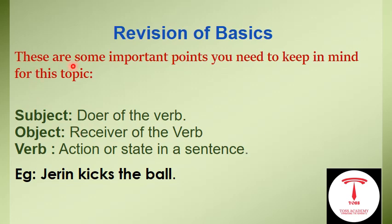These are some important points to keep in mind for this topic. Who is a subject? Very simple — the doer of the verb in a sentence is the subject. Second, object: the object is the receiver of the verb. And finally, what is a verb? A verb expresses an action or state in a sentence.